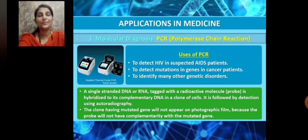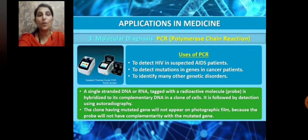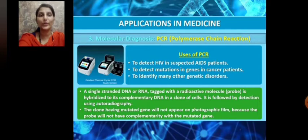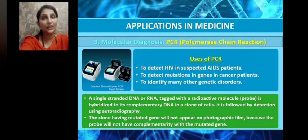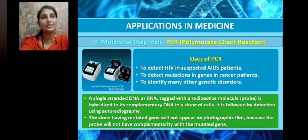How is PCR done? A single-stranded DNA or RNA is tagged with a radioactive molecule, and this radioactively labeled single-stranded DNA or RNA is called a probe. This probe is hybridized to a complementary DNA in a clone of cells, and the presence of this radioactive probe is detected using autoradiography.